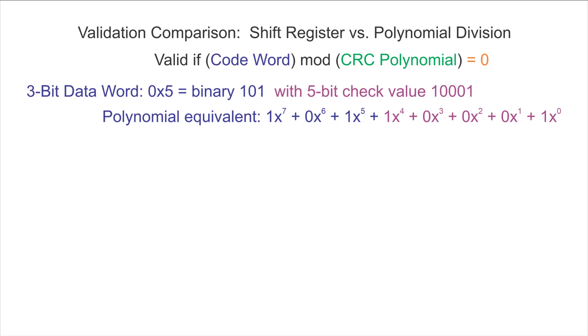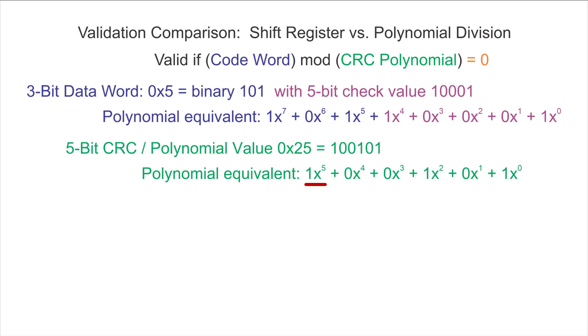That ends up being a codeword of polynomial x to the 7th plus x to the 5th plus x to the 4th plus 1. And we use a CRC polynomial value of x to the 5th plus x squared plus 1. What we're computing is whether x to the 7th plus x to the 5th plus x to the 4th plus 1 mod x to the 5th plus x squared plus 1 equals 0. If it equals 0, it's a valid codeword. If it does not equal 0, it's not a valid codeword.